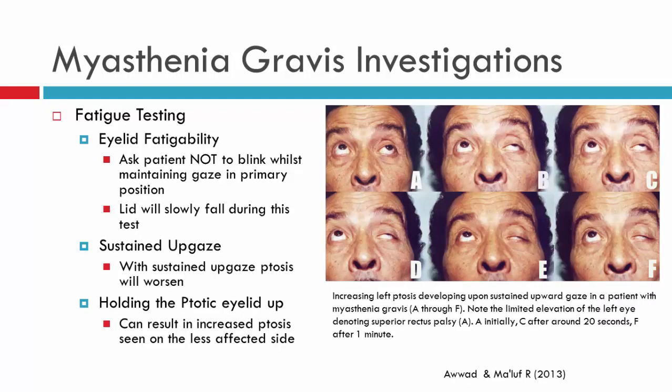Conversely, we can actually try and fatigue the patient and see if symptoms worsen with fatigue. We can look at eyelid fatigability — ask your patient not to blink whilst maintaining primary position gaze, and usually what you'll see is the lids slowly start to droop further and further. You can ask them to do sustained up gaze and hold it as long as possible, and the ptosis will start to get worse with time. This relates to that levator weakness discussed in the previous video. You can also look for enhanced ptosis — hold the eyelid up of one eye and you may see an increase in ptosis of the less affected side.